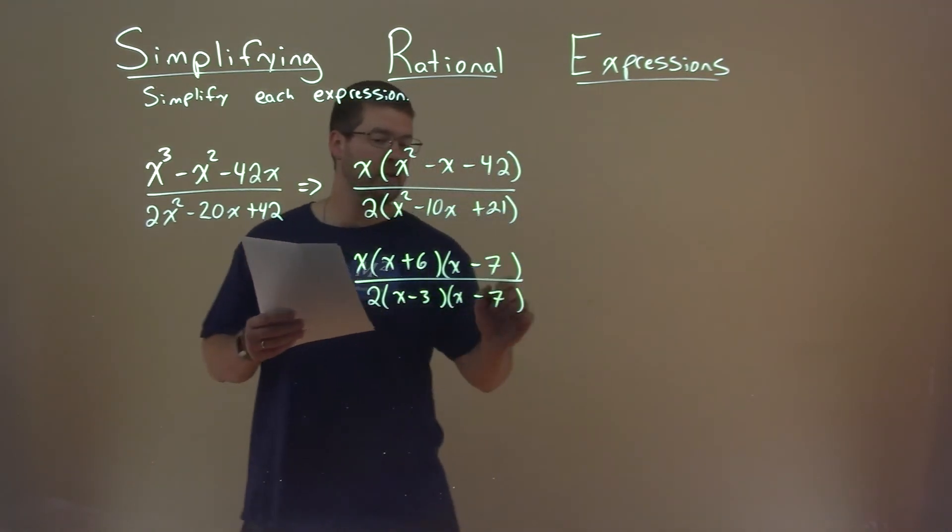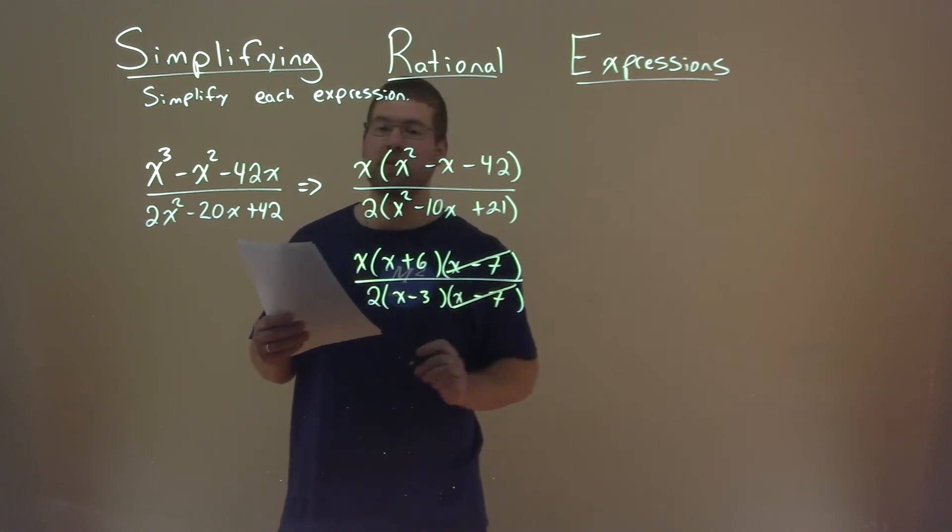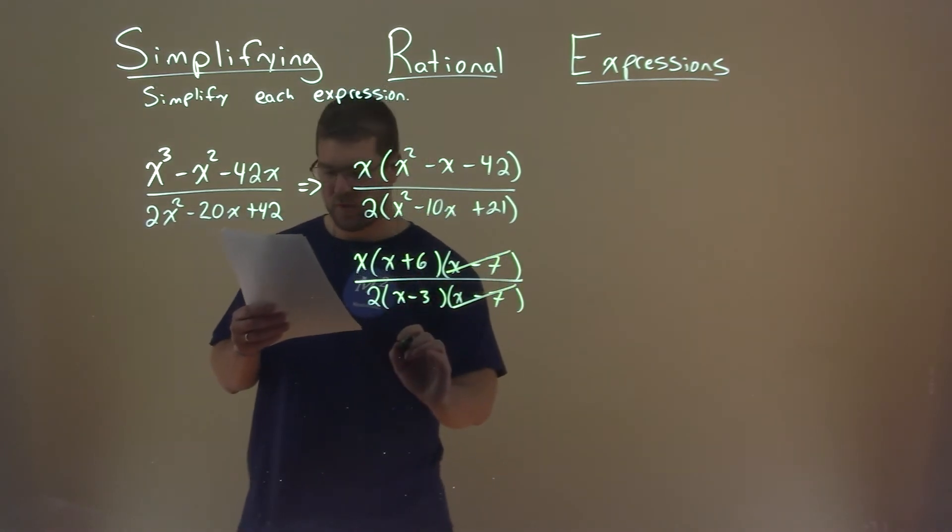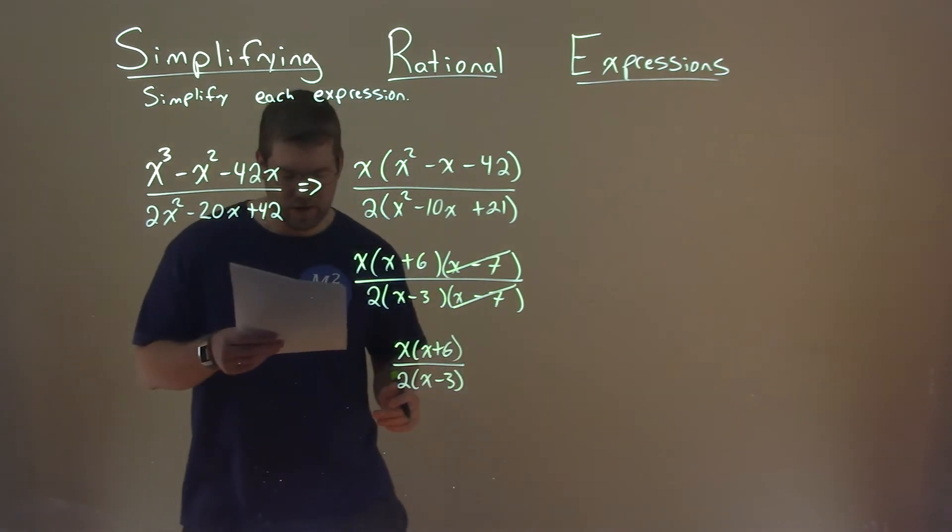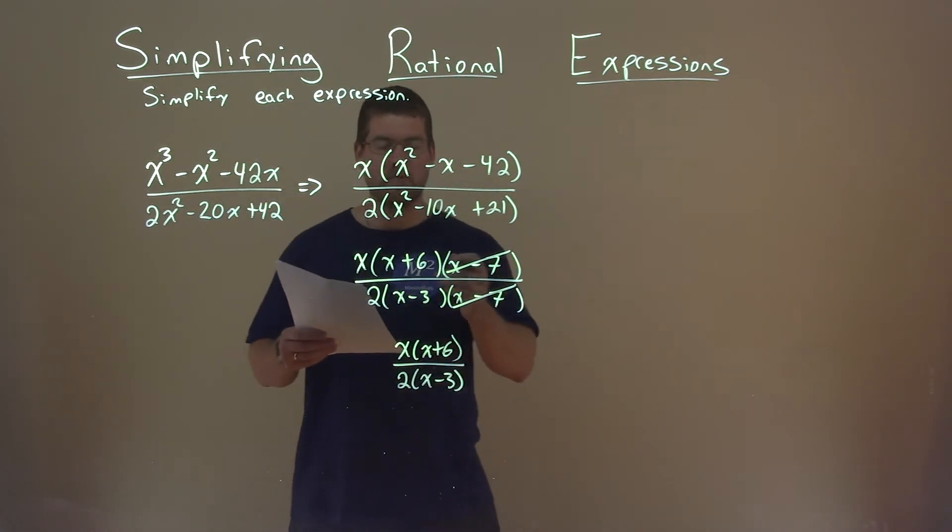Hopefully you can see the x minus 7s can cancel each other out. And now we're in simplest form. We have an x times x plus 6 in the numerator over 2 times x minus 3 in the denominator. And that is our final answer.